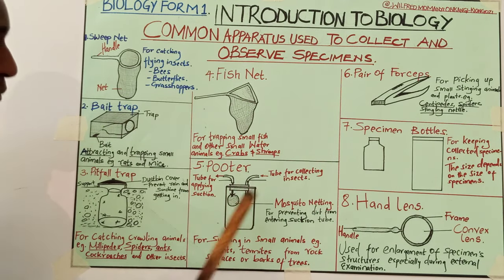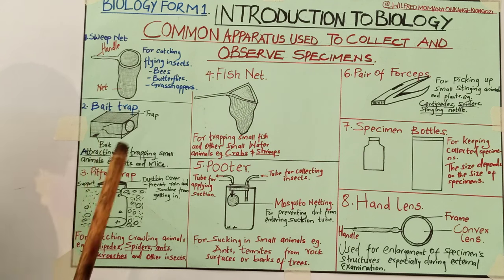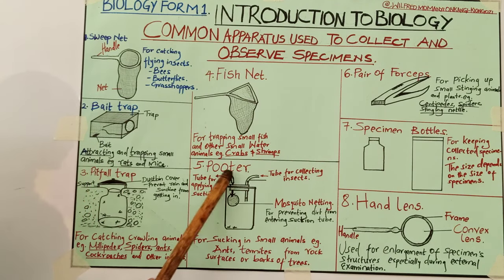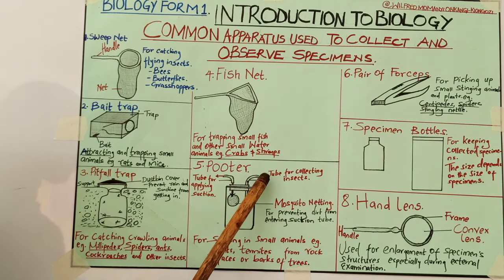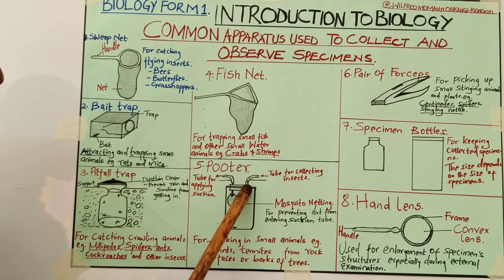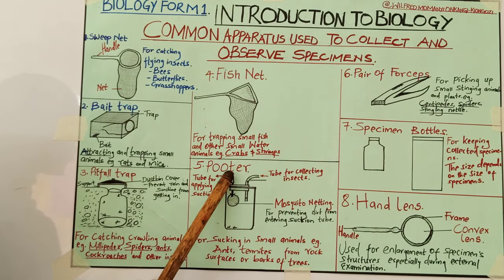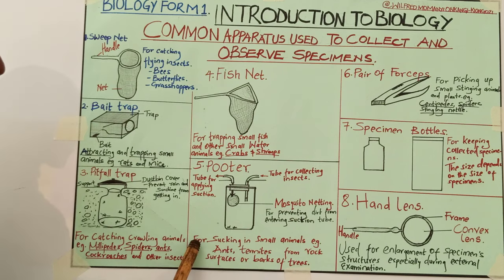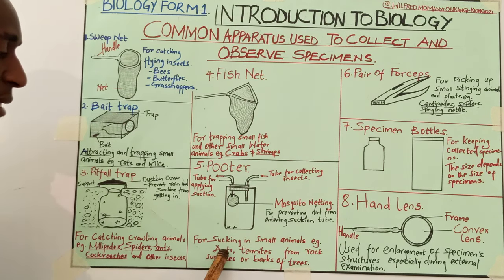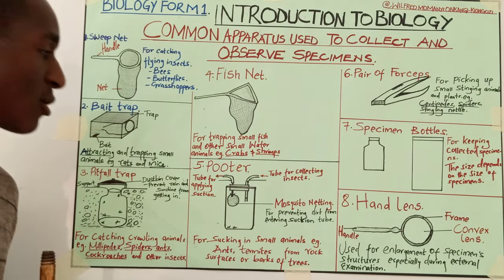You must be very keen on the parts of these apparatus. After the mosquito netting, we have the specimen collected at the bottom. You must indicate that. There is the arrow that shows the collection of the specimen entering the collection tube, and there is the arrow that shows suction from the tube that comes from the mosquito netting outwards. The function of the pooter is for sucking small animals such as ants and termites from rock surfaces and barks of trees.